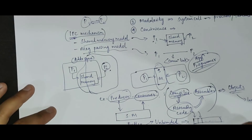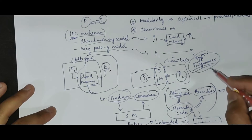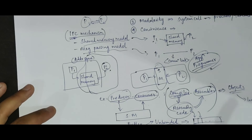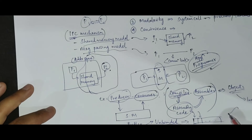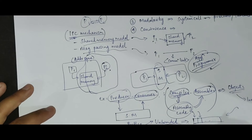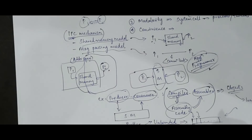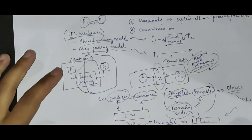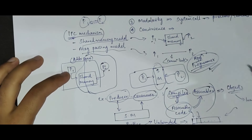All this handling should be added by the application programmer. There is one more problem: the producer and consumer may both try to access the shared location simultaneously, which can cause synchronization issues. All synchronization-related handling should also be managed by the application programmer.